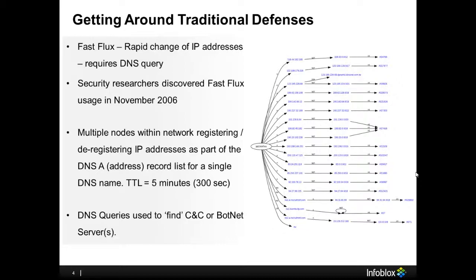Fast flux — the rapid change of IP addresses — is how malware can find botnets and command and control servers without having to use a fixed IP address, which can easily be blocked. Fast flux was discovered and confirmed by security researchers in November 2006 and has been used significantly since then to make blocking communication between on-site malware and internet-based command and control servers hard to stop. The simplest type, referred to as single flux, is characterized by multiple nodes within a network registering and deregistering their addresses as part of a DNS A address record for a single DNS name. This combines round-robin DNS with very short — usually less than five minutes' — time-to-live values to create a constantly changing list of destination addresses for that single DNS name.